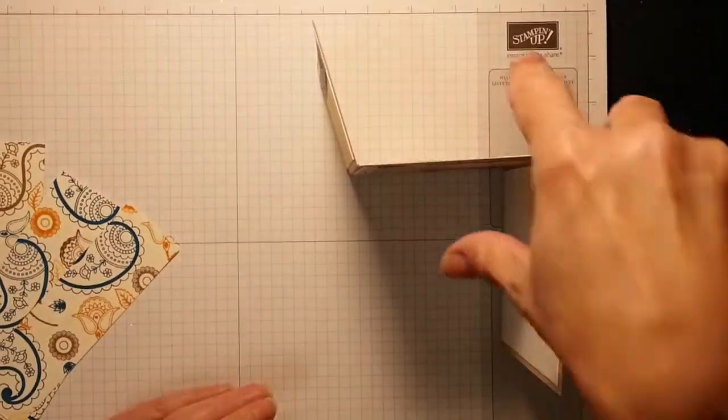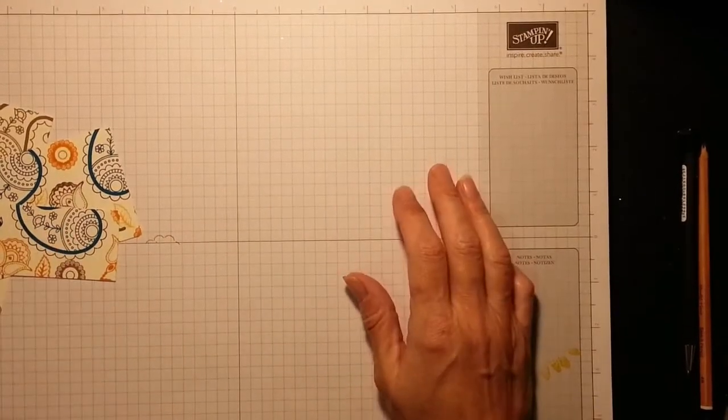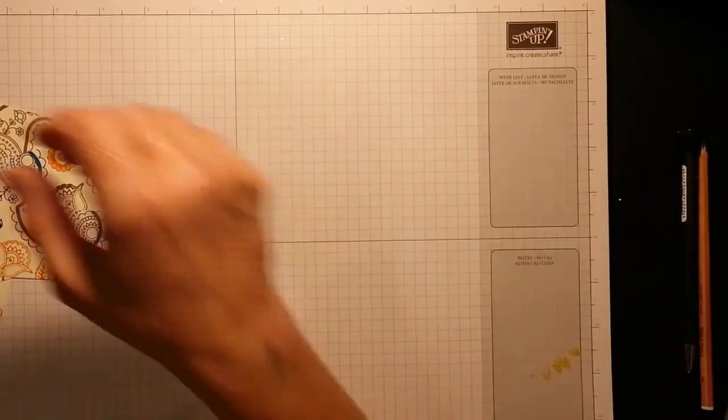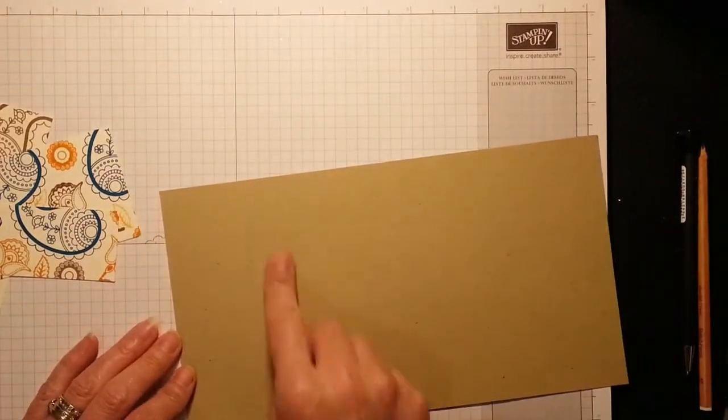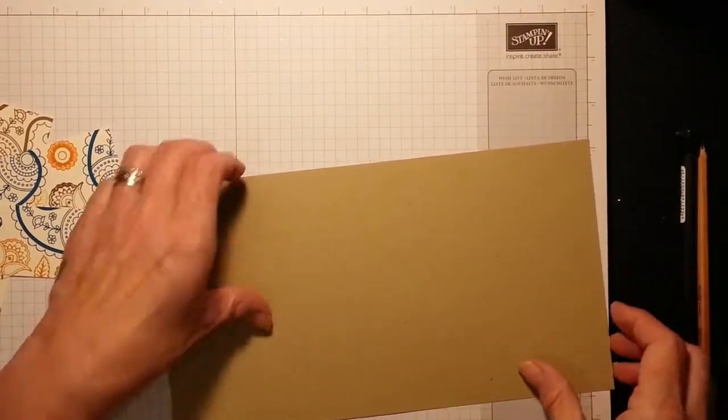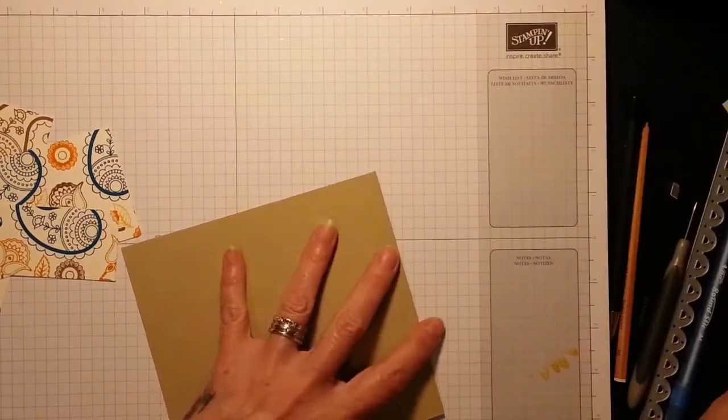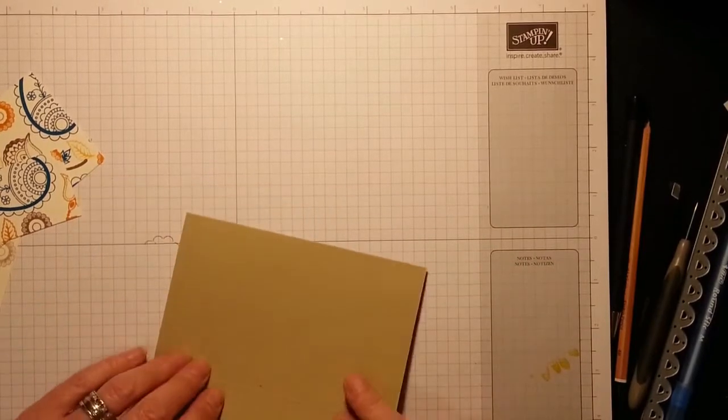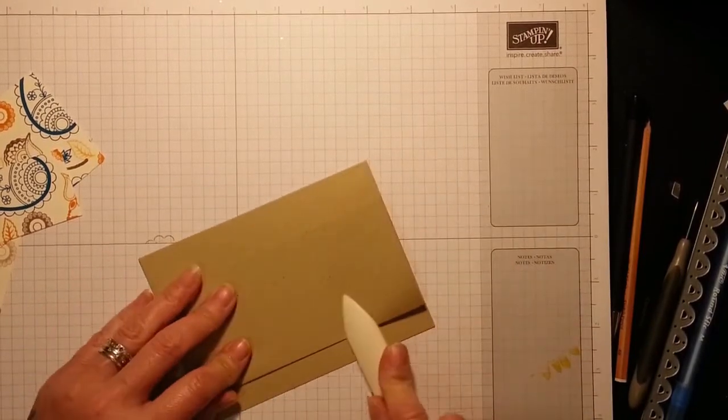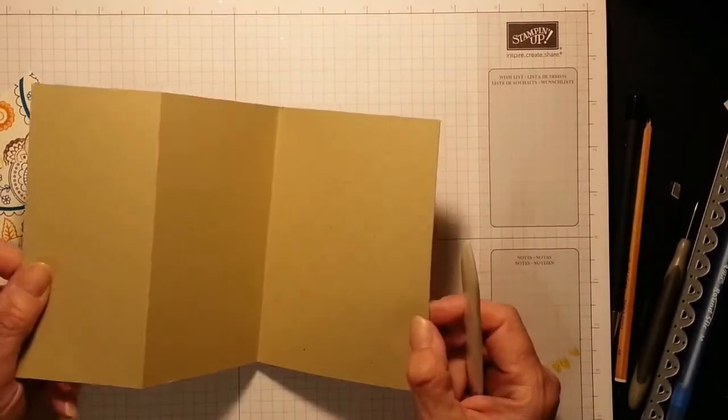What we're going to need is a piece of crumb cake. I scored at two and a half and six, which we're now going to burnish our fold lines. It is 10 o'clock again and I'm a glutton for punishment. Then we're going to fold this piece back. That's 10 by five and a half, scored at two and a half and six.